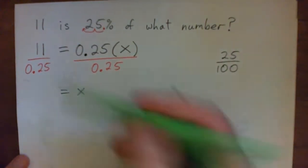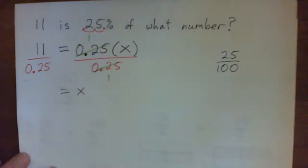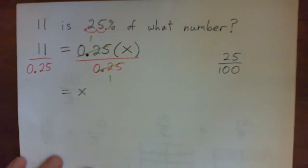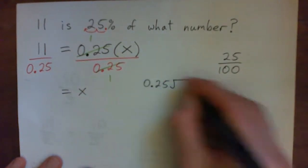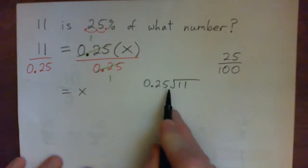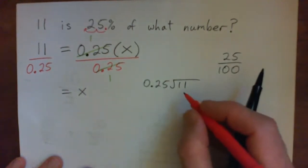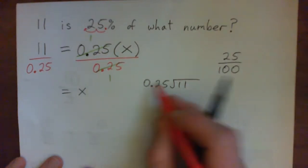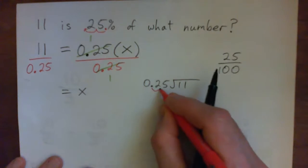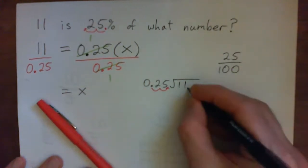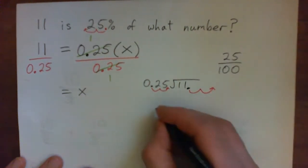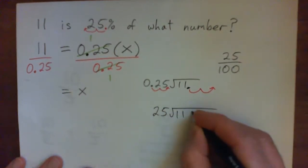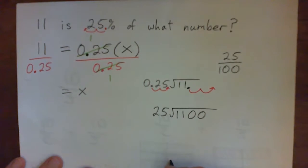So we have to calculate 11 over 0.25. There are a number of ways of doing it. I'll just do it the straightforward way, which is directly try to do the division: 11 divided by 0.25 into 11. Now the problem is we have to deal with this decimal point in the divisor, so we need to move this decimal point two spots to the right. And if we do that, then this decimal point must go two spots to the right as well.